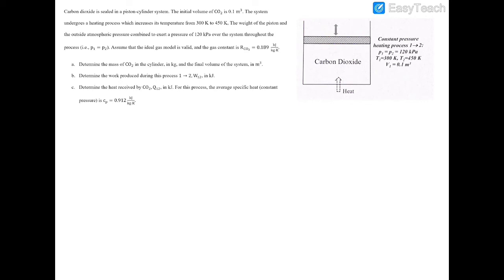Here we have another piston-cylinder assembly. We have carbon dioxide sealed inside of a piston-cylinder system, with an initial volume of 0.1 meters cubed. It's going to undergo a heat process which increases the temperature from 300 degrees to 450 degrees. The weight of the piston and outside atmospheric pressure combined exert 100 kilopascals over the system throughout the process, so P1 equals P2 — an isobaric process. We assume an ideal gas, and the gas constant for carbon dioxide is given.